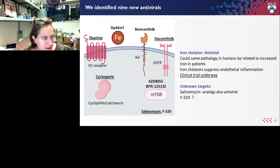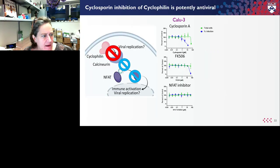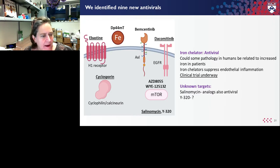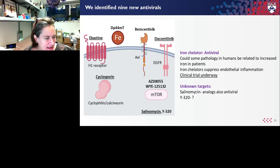We also identified an iron chelator that seems to be antiviral. Some of the pathology in humans could be related to increased iron in patients, and iron chelators can impact endothelial inflammation. There's actually a clinical trial underway with related iron chelators. We also identified two drugs with unknown targets — selenomycin and Y320. Selenomycin is an approved drug used in cancer, and we've identified a number of analogues of selenomycin that are antivirals. We're really interested in trying to uncover what target of selenomycin is causing it to be so potently antiviral.